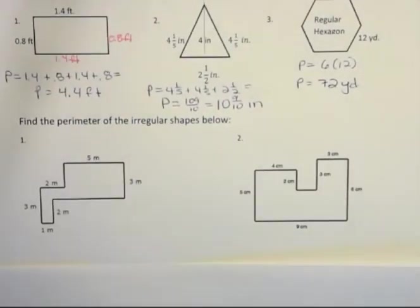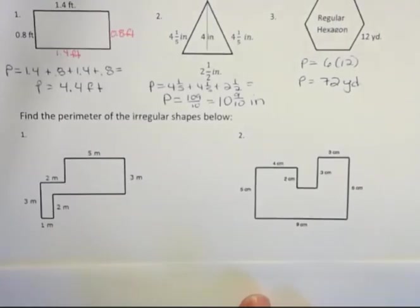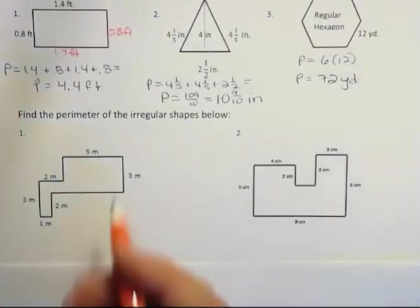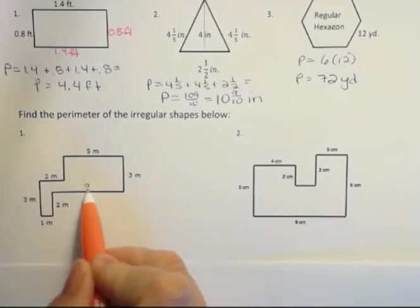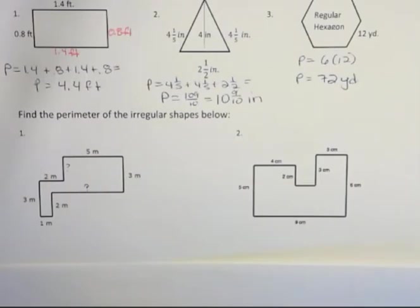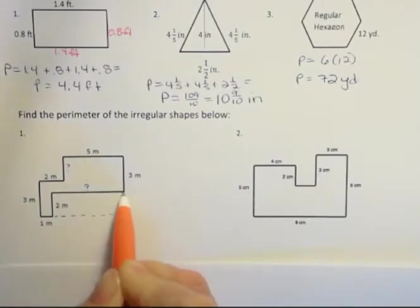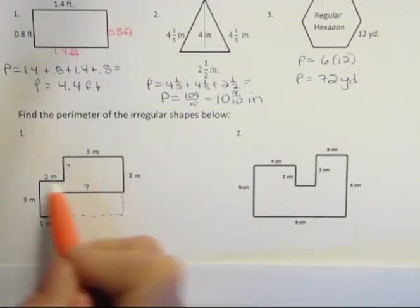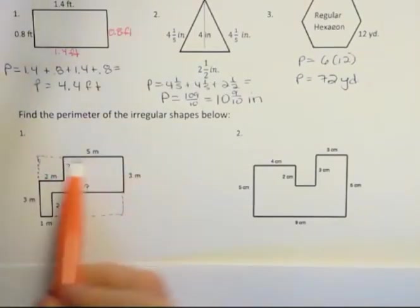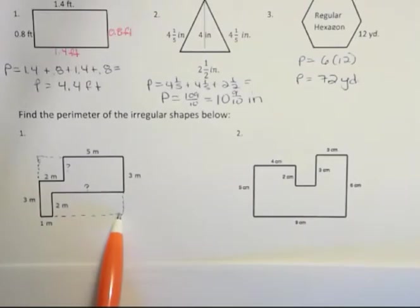All right, what if I was given an irregular shape like this one? Well, in an irregular shape, you have to figure out all the missing sides. You can see that I don't know what this side is in this particular picture. And I don't know what this one is either. And so I need to figure out what they are. Well, let me draw this rectangle out this way and this way.